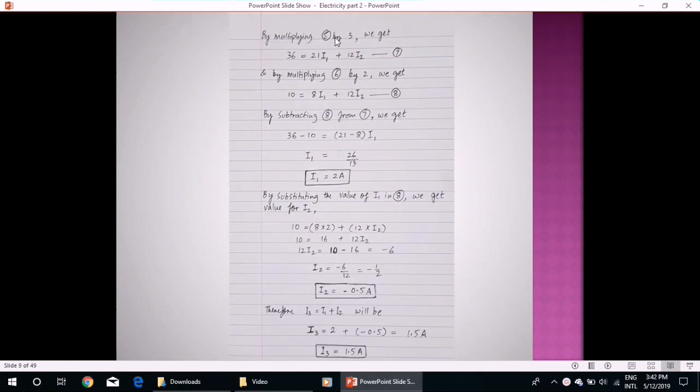By multiplying equation 5 by 3, we get this expression and by multiplying equation number 6 by 2, we get this expression. Now, we subtract this equation 8 from equation number 7 and we get value of I1. Now, we substitute the value of I1 in 8 and we will get I2 by these calculations. Therefore, I3 which is equal to I1 plus I2 according to Kirchhoff's first law will be equal to 1.5 amperes.